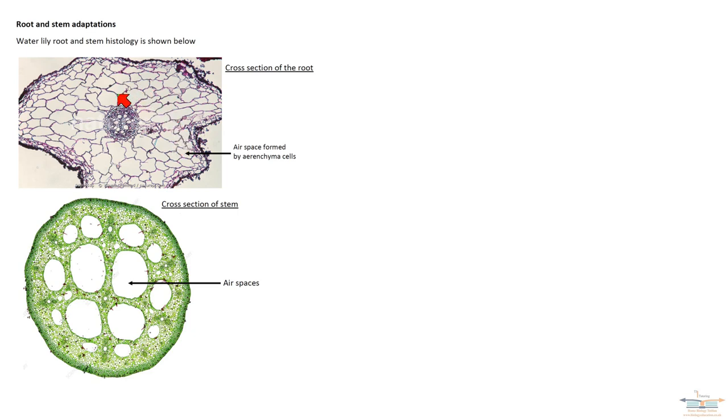Now, what you can see is the vascular bundle is centrally located there. So you'll have your xylem and phloem in there. But there will be far less amounts of lignin within the xylem vessels. The reason being is you don't need the lignin for support in the root or, in fact, in the stem, because the water provides the support that keeps the plant supported in the water.